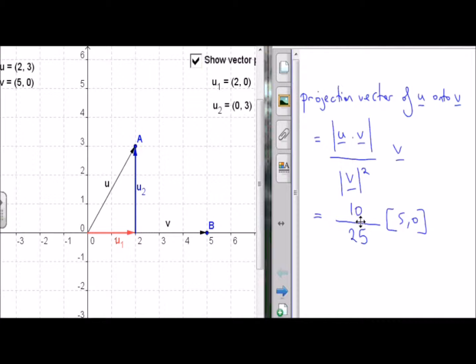So now we cancel down 10 on 25 by a factor of 5, to give us 2 on 5. Multiply this by the vector (5,0), and we end up with (2,0), which is the projection vector we have on our diagram here, u1. And we can see up here, (2,0), once again.